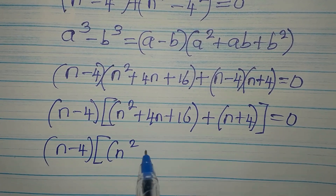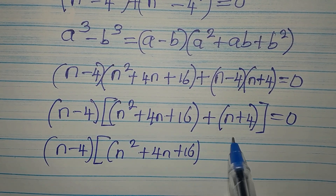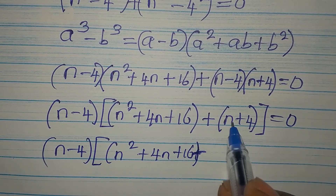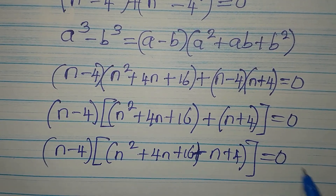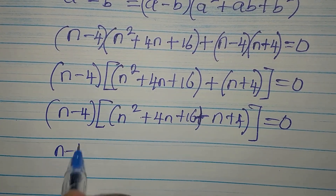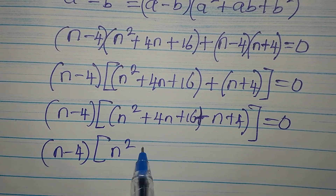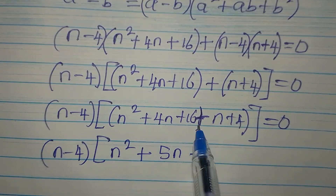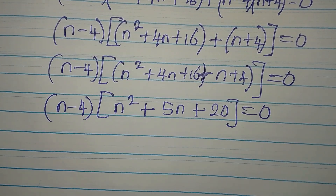We open the brackets inside: n² + 4n + 16 plus n + 4, giving us n² + 5n + 20. So the factored equation is (n minus 4)(n² + 5n + 20) = 0. It's either the first factor or the second that equals zero.